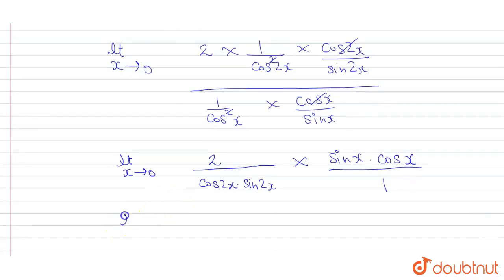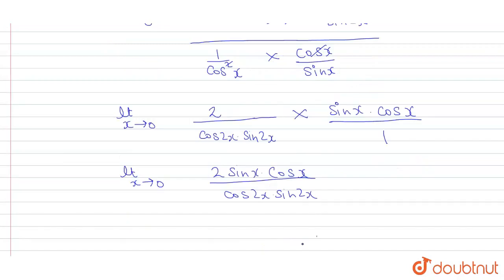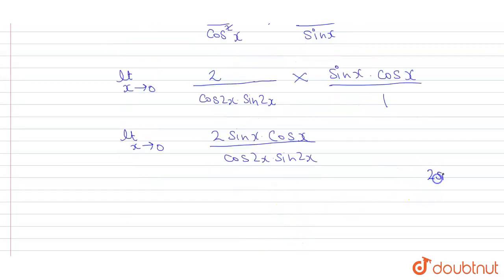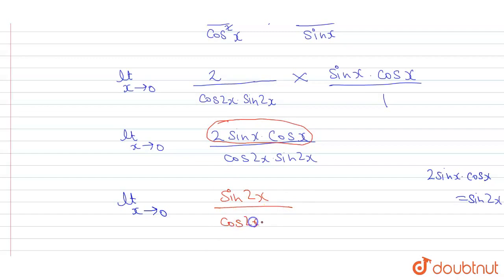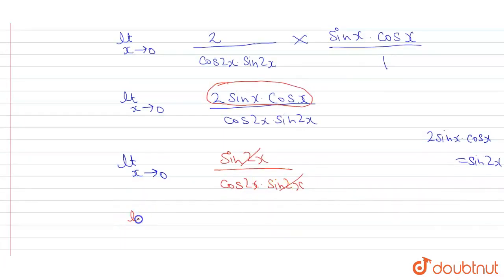So limit x tends to 0 of 2 sin x cos x upon cos 2x sin 2x. Now we know 2 sin x cos x is sin 2x. So we can write limit x tends to 0 of sin 2x upon cos 2x into sin 2x. Sin 2x cancels out, so we are left with limit x tends to 0 of 1 upon cos 0.